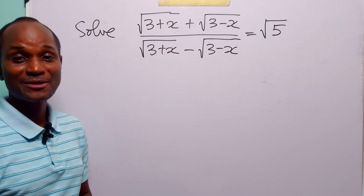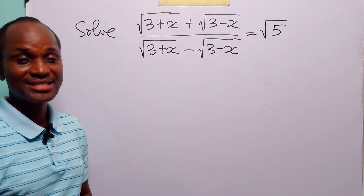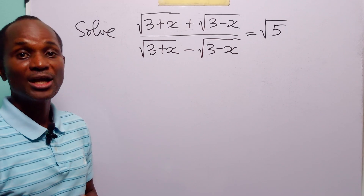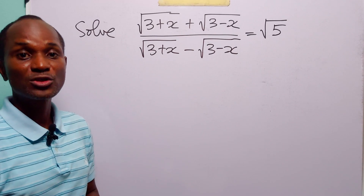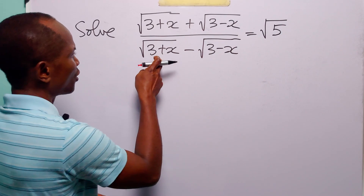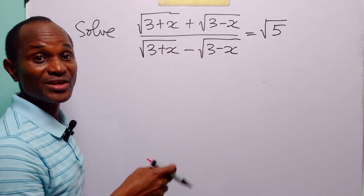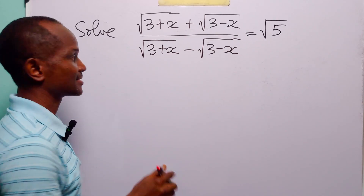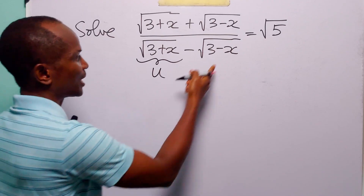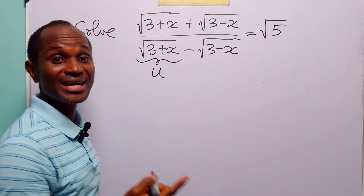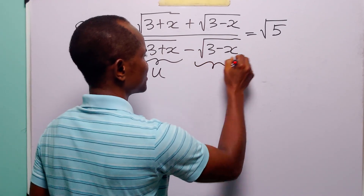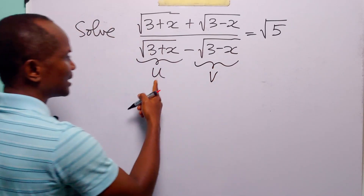Hello and welcome. In this math tutorial our task is to solve this equation for real values of x. To do this we are going to start with a very simple substitution: we are going to call the square root of 3 plus x 'u', and we are going to call the square root of 3 minus x 'v'.